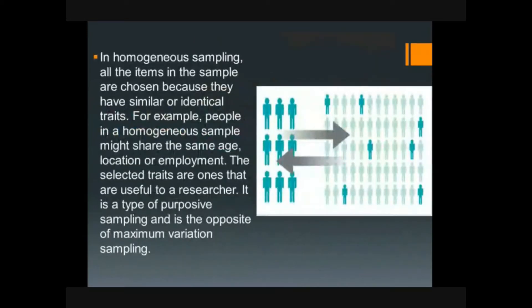In homogeneous sampling, all the items in the sample are chosen because they have similar or identical traits. For example, people in a homogeneous sample might share the same age, location, or environment.